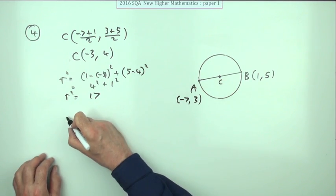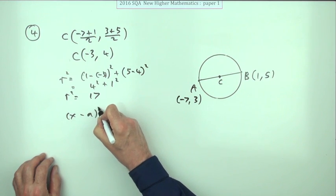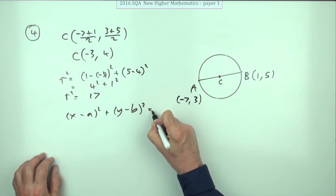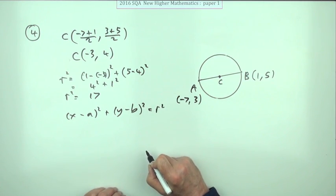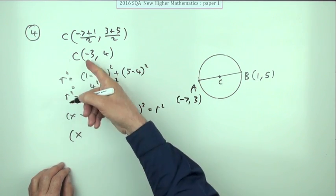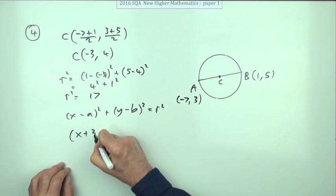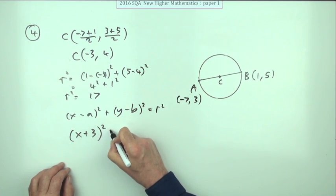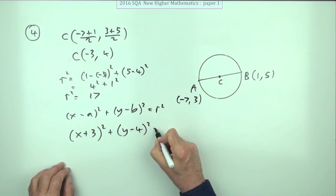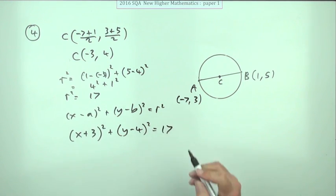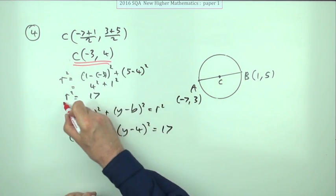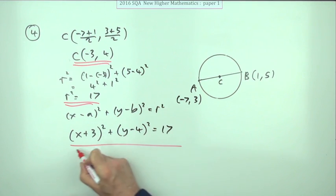Put them together into (x − a)² + (y − b)² = r². You've got x minus negative 3, which means x plus 3, squared. Y minus 4 squared equals 17 — and you've already squared it, so that's 17. That gives you the centre and the square of the radius in the final answer.